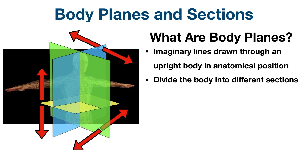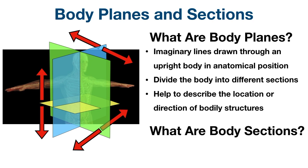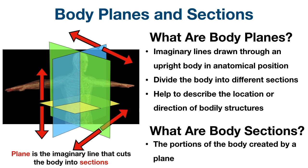The body planes provide different views or sections of the body, which allows us to describe the location or direction of anatomical structures. Sections are the portions of the body created by the cut from the plane — right and left, upper and lower, or front and back sections depending on the slice. The simple way to think about it: the plane is the imaginary line that cuts the body into sections, allowing us to look at different views depending on the direction of the cut.